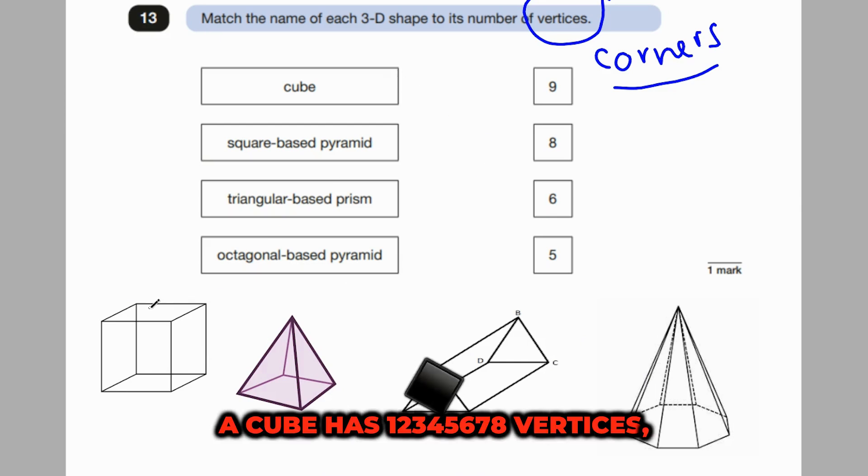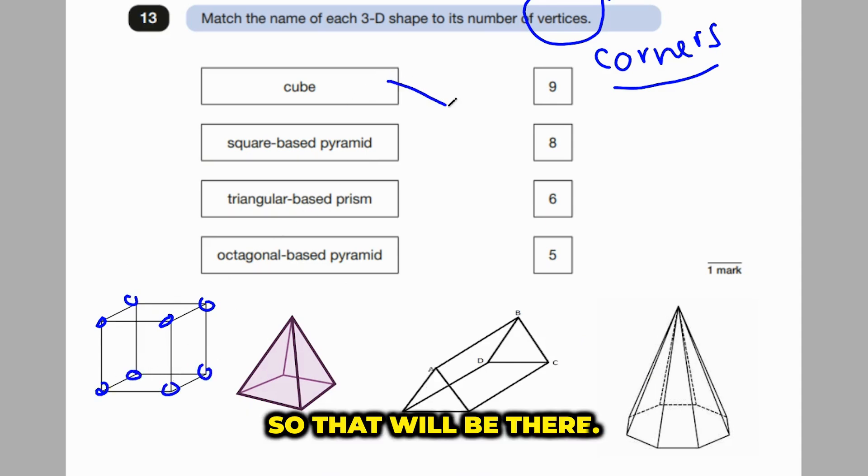For example, a cube has 1, 2, 3, 4, 5, 6, 7, 8 vertices. So that would be there.